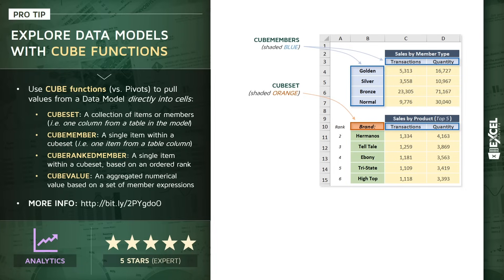Next up, we have a special type called a cube ranked member, shaded in green in the visual. These are just like cube members — individual items within a cube set — except they're based on an ordered rank. That's what allows us to do things like show the top five products by quantity.